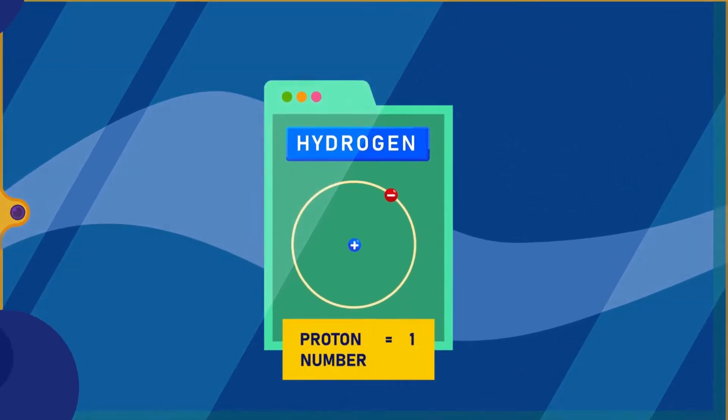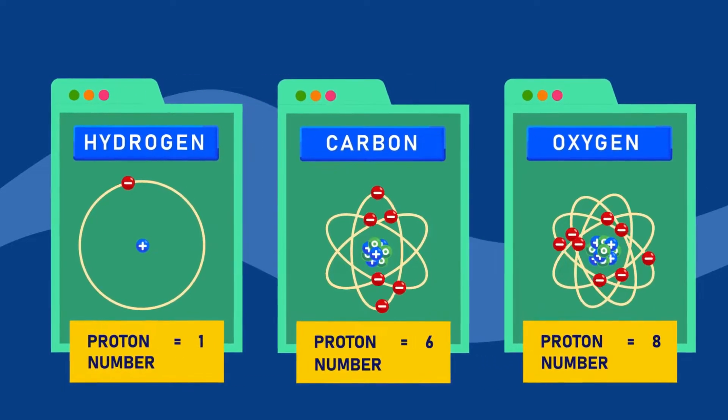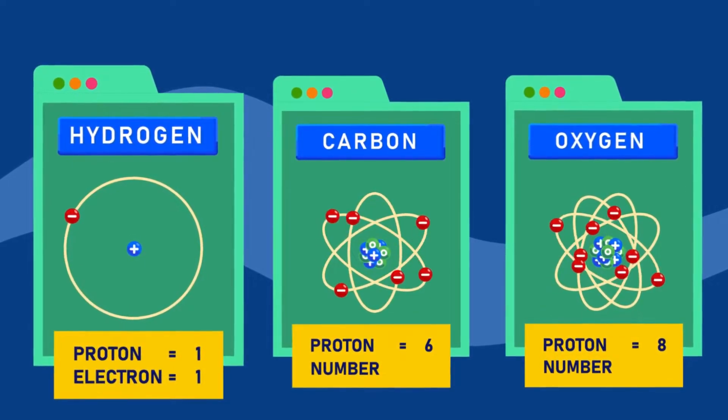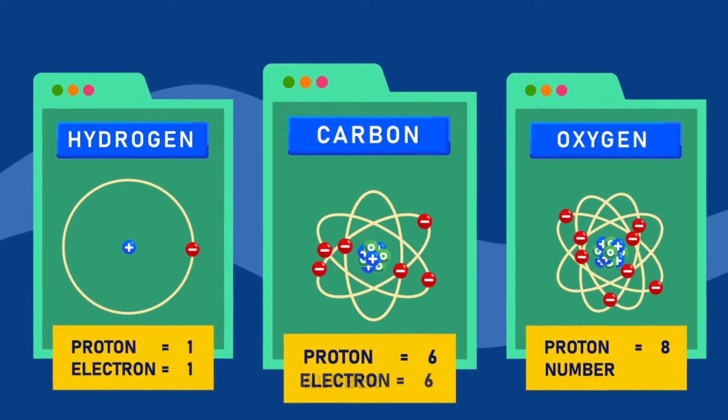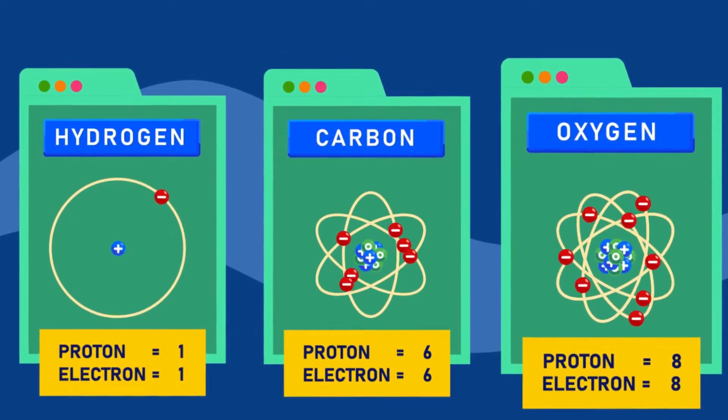For example, the proton number of hydrogen is 1, carbon is 6, and oxygen is 8. This means hydrogen has 1 proton and 1 electron. Carbon has 6 protons and 6 electrons, and oxygen has 8 protons and 8 electrons.